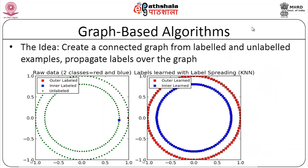There are also graph-based algorithms. The idea is to create a connected graph from labeled to unlabeled examples and propagate labels across the graph — this is called the label propagation algorithm. Graph-based algorithms are also present which use both labeled and unlabeled data.